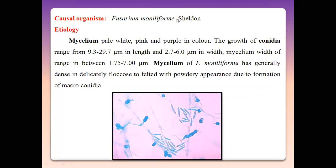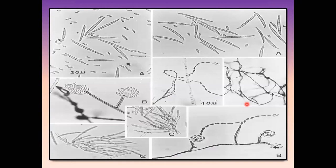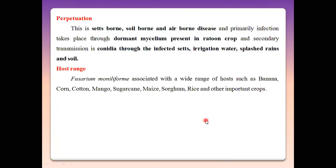The causal organism is Fusarium moniliforme, which reproduces asexually by forming asexual spore fruits producing mycelia and conidia. Fusarium produces two types of conidia: microconidia and macroconidia. Under unfavorable conditions, this fungus also develops chlamydospores instead of conidia. Perpetuation occurs through dormant mycelium persisting in rotten infected sugarcane plants, and secondary transmission takes place through conidia, infected seeds, irrigation water, splashing rains, and soil. Fusarium moniliforme has a wide host range beyond sugarcane.